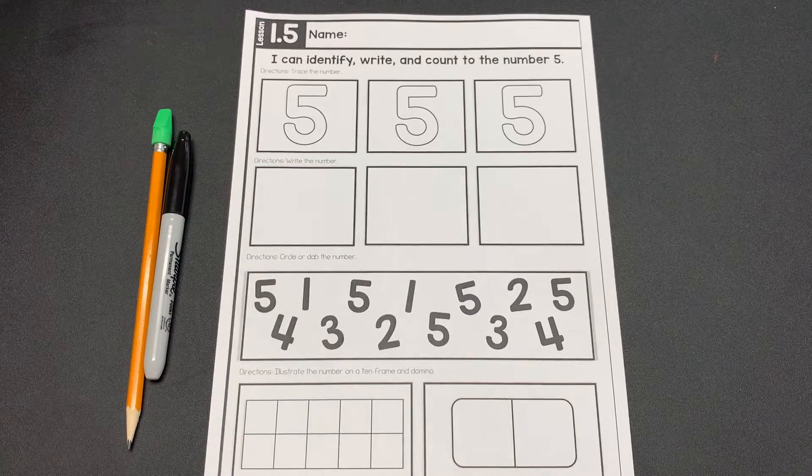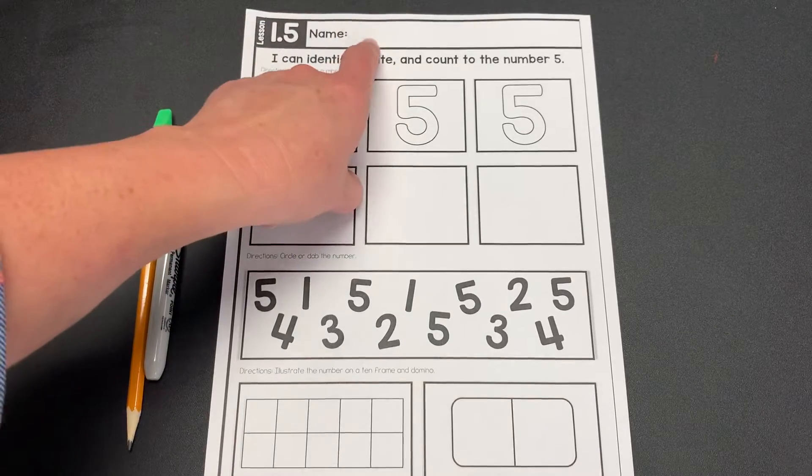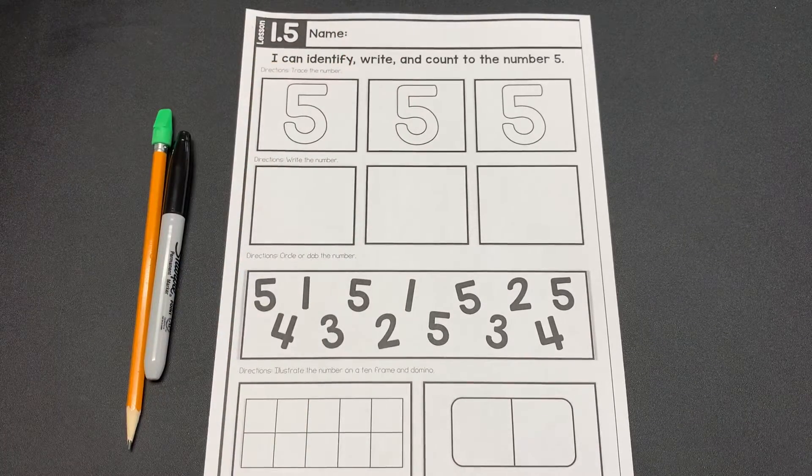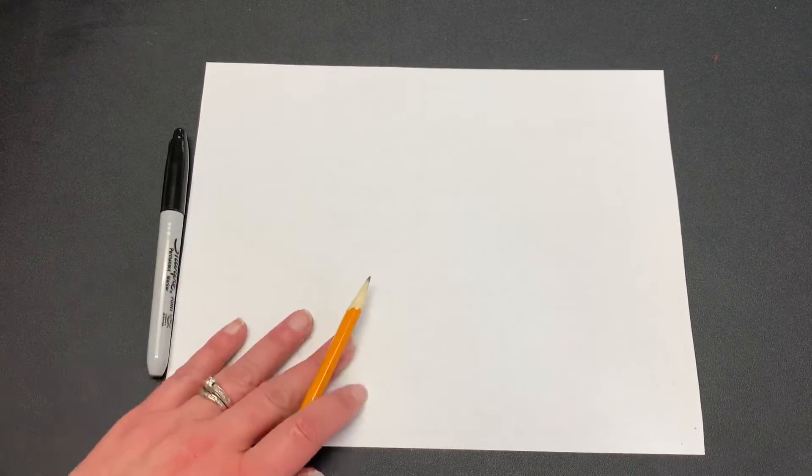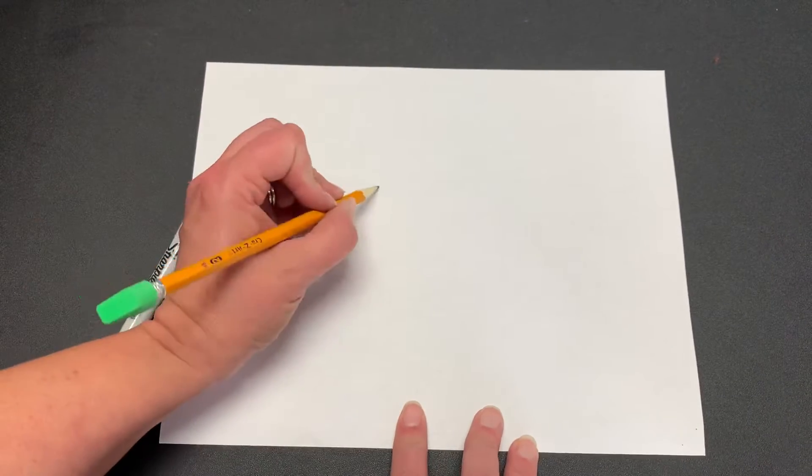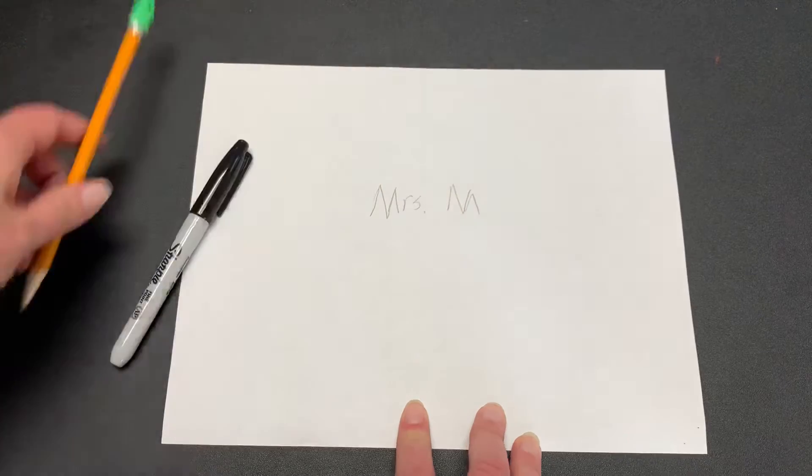Now, the first thing we need to do is write our name. But gosh, you know what? This spot for the name is just so teeny tiny. Here's what we're going to do. I'm going to flip my paper over and write my name on the back with my pencil. Here it is. Mrs. Meanshooper.